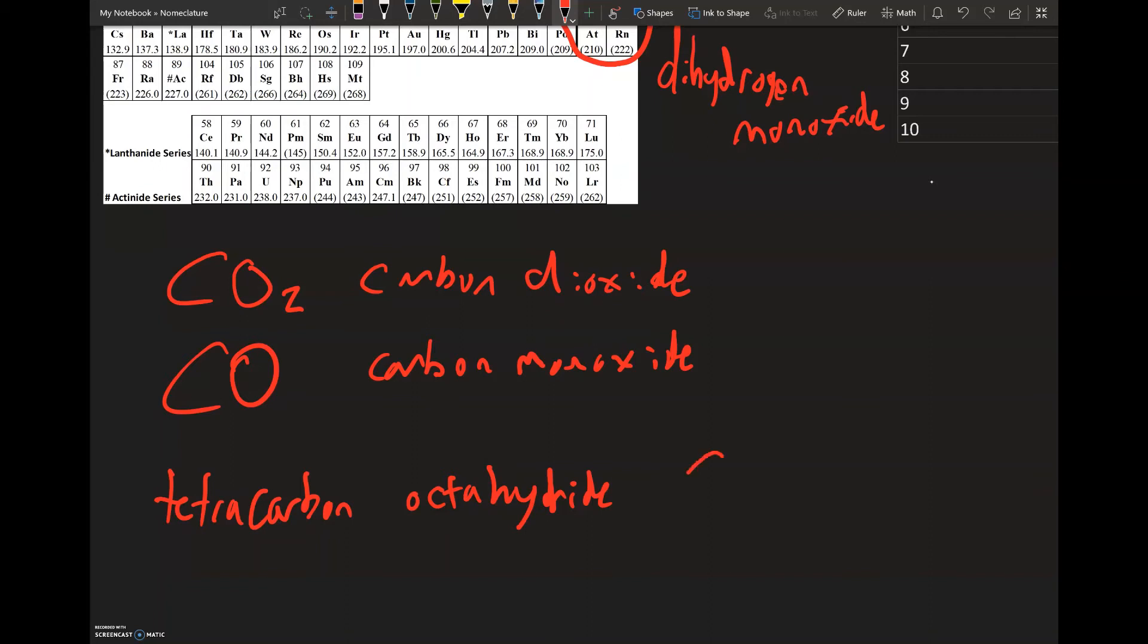Tetracarbon, tetra is four, that means we have four carbons. And then octahydride, hydride is hydrogen and octa means we have eight hydrogens.